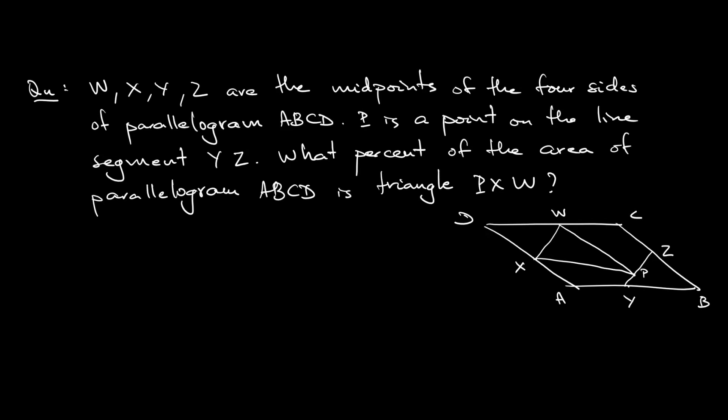The question says W, X, Y, and Z are the midpoints of the four sides of parallelogram ABCD. As you can see from the diagram, ABCD is a parallelogram. W is the midpoint of CD, X is the midpoint of DA, Y is the midpoint of AB, and Z is the midpoint of BC.